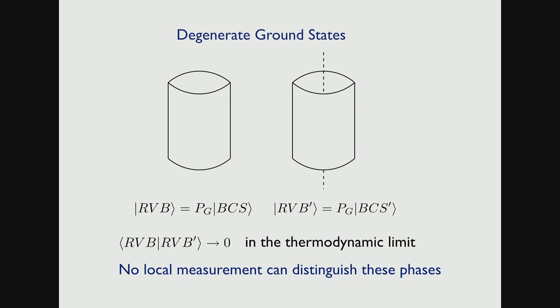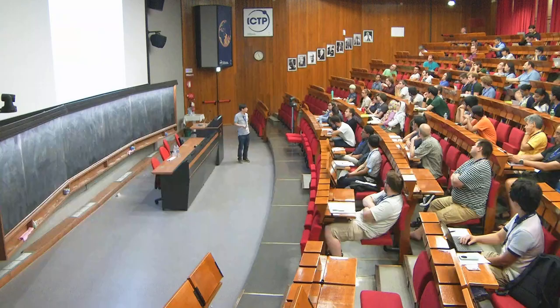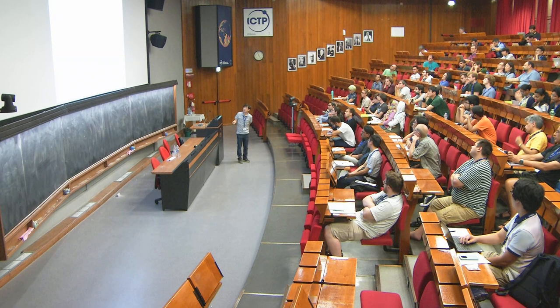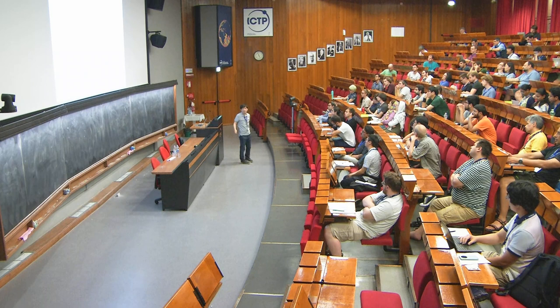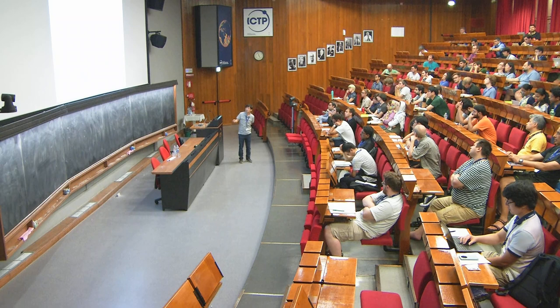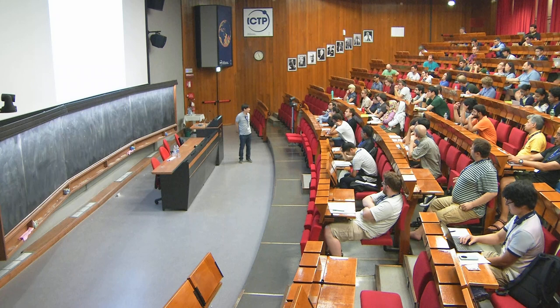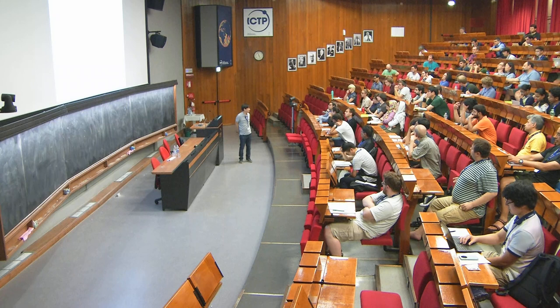No local measurement can distinguish these phases of matter because the change is essentially global. The energy difference goes like e^(−length of cylinder). That's the energy cost to pull the vortex out. If the cylinder is infinitely long, the vortex cannot escape, so the energies become degenerate.